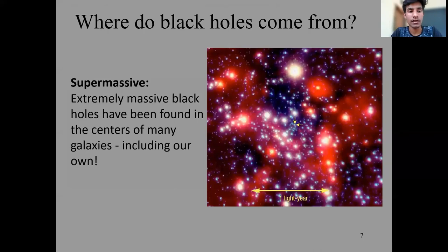The second type is supermassive. Extremely massive black holes are found in the center of many galaxies, including ours. These black holes are found in the center of galaxies and also found in our galaxy.